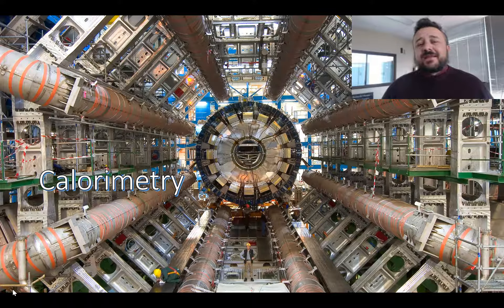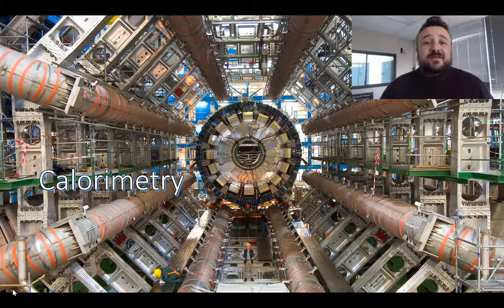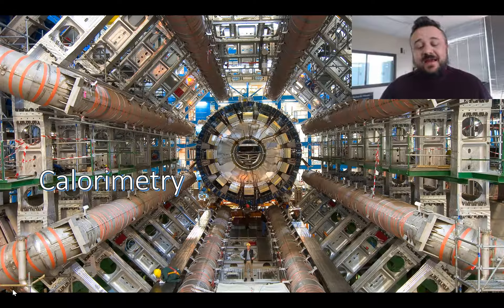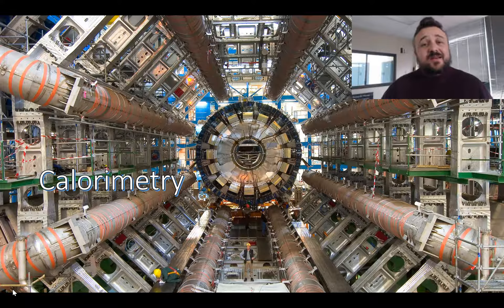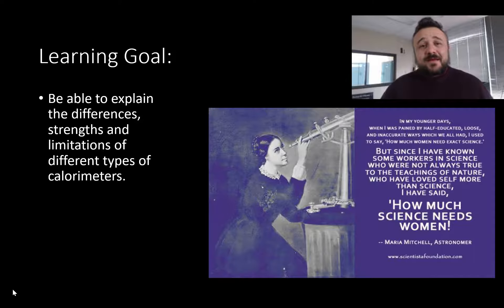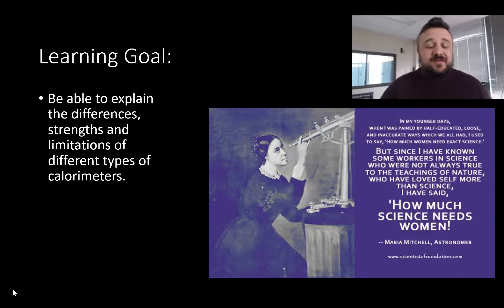G'day nerds. So let's talk about calorimetry. We're going to have really simple calorimetry in a school lab, or we're going to have this beast, which is the Atlas calorimeter at CERN. It's just phenomenal, but it works on the same sort of principle — we're measuring energy changes, and that's what a calorimeter does. By the end of this lesson, you should be able to explain the differences and strengths and limitations of different types of calorimeters.